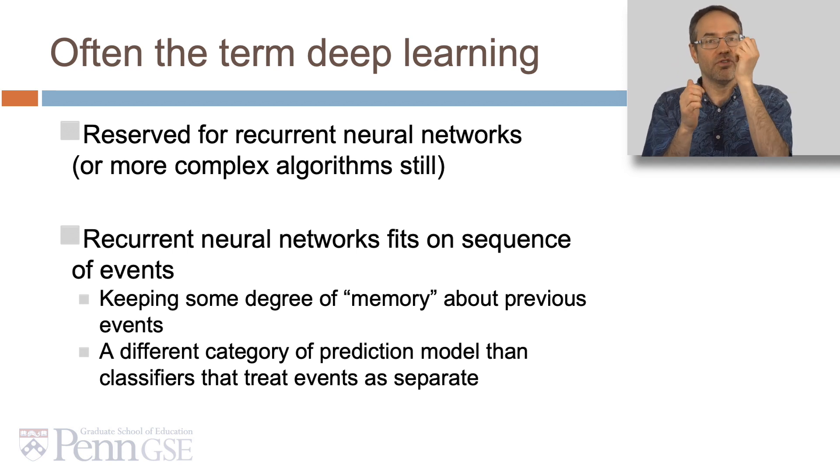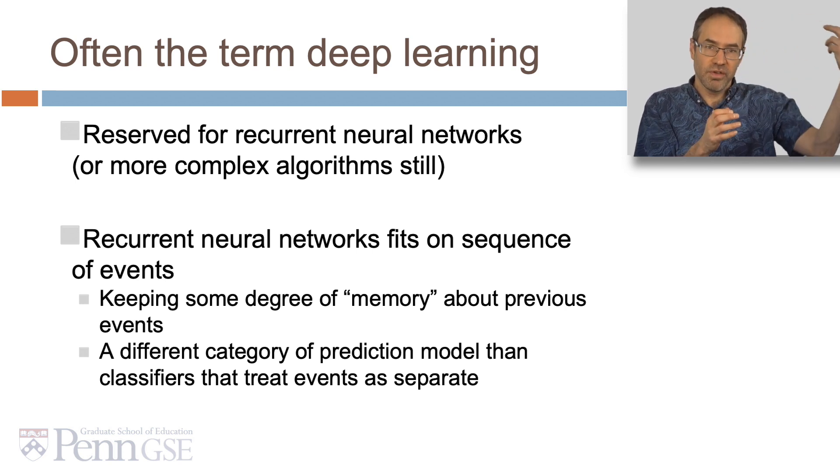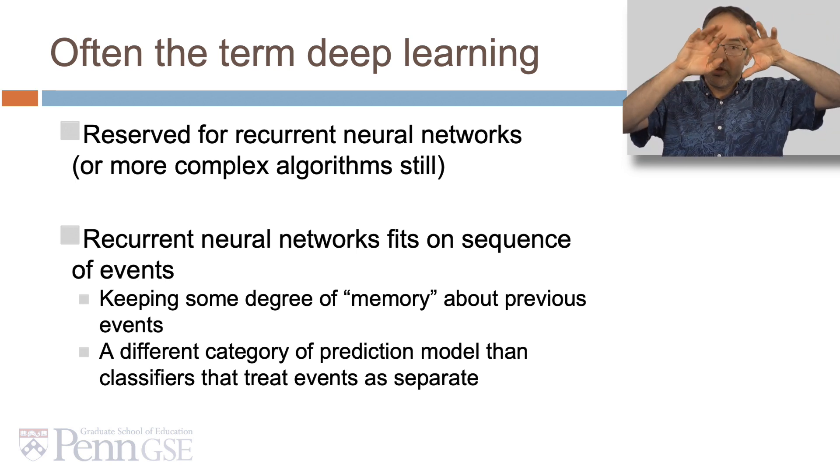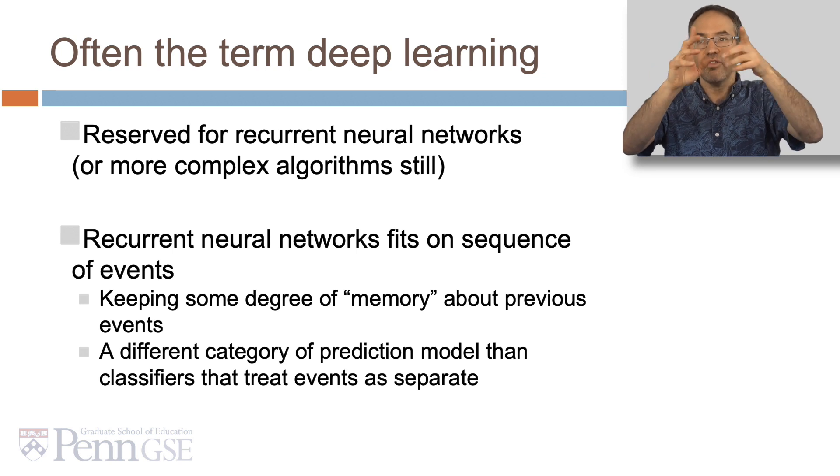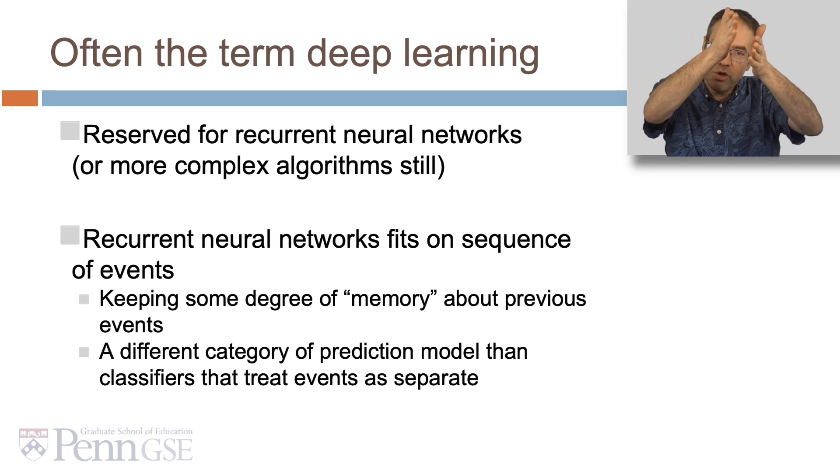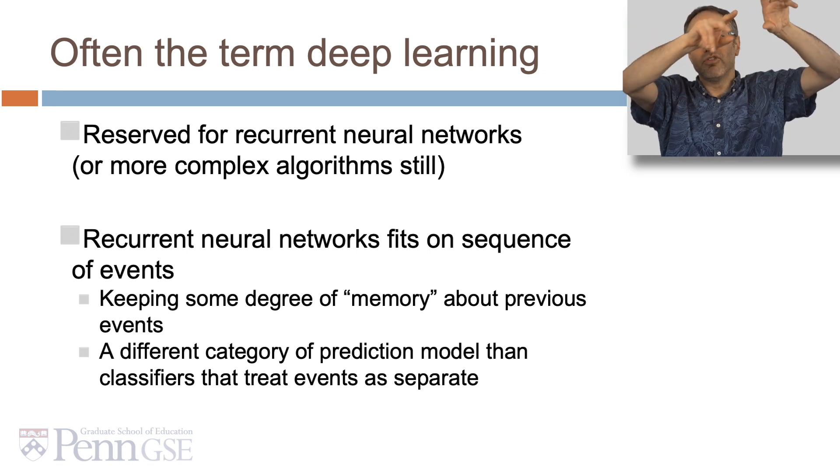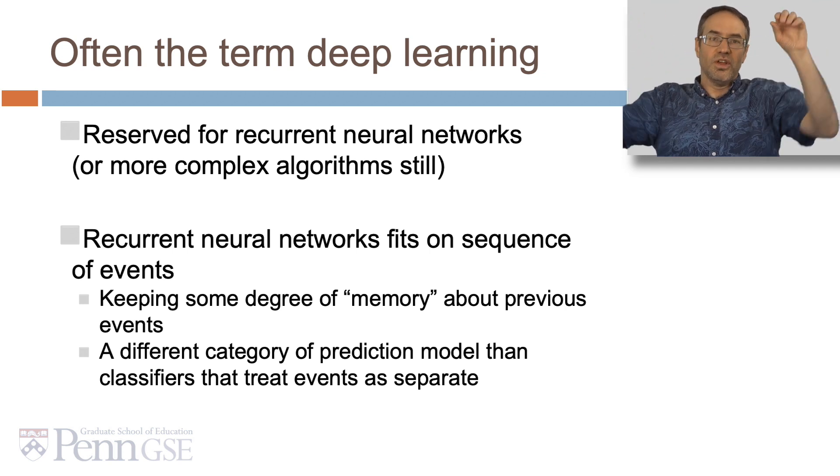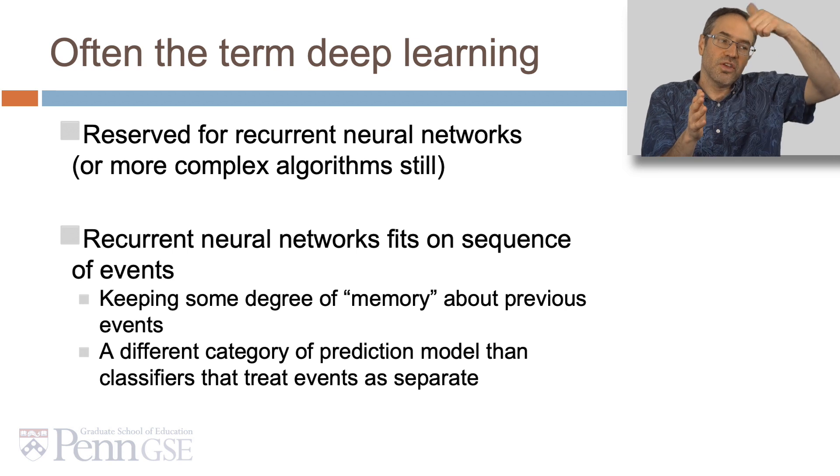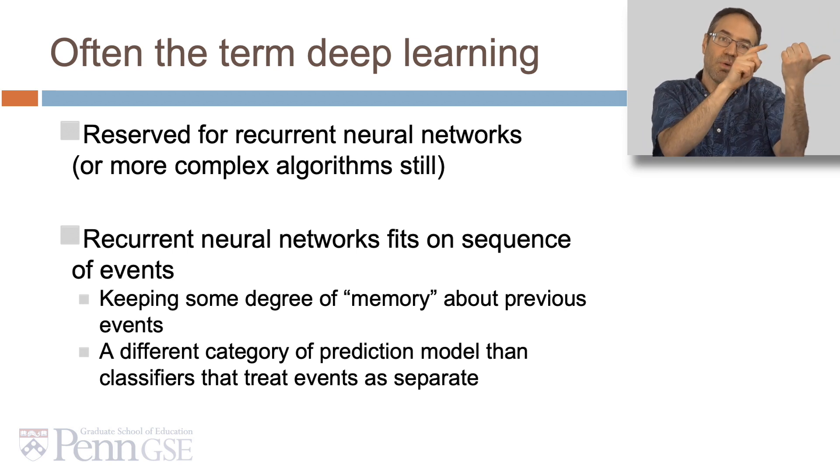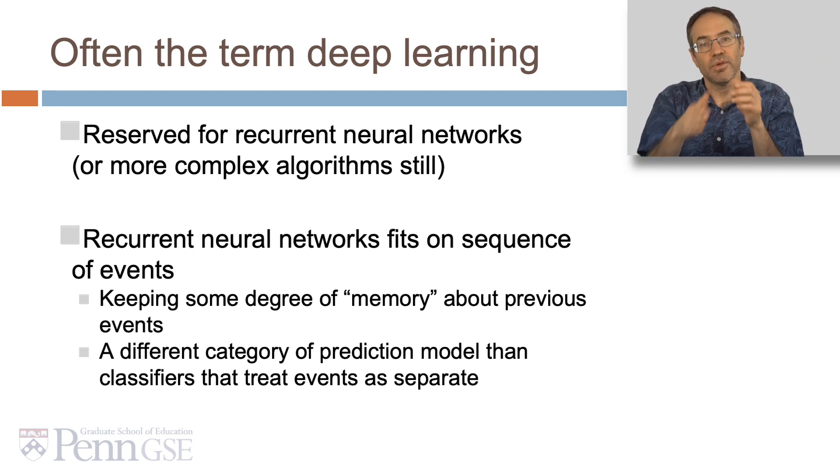Recurrent neural networks fit on a sequence of events. They keep some degree of memory about the previous events. What they're doing is, rather than having a single event, a single prediction being made, you have a sequence of events, a sequence of occurrences, and you want to make predictions about each event in that sequence. A recurrent neural network says, okay, I still remember what prediction I made for Ryan at time 4, now I'm making a prediction at time 5, and I'm going to use that information from time 4 and before. This is a different category of prediction model than classifiers that treat these events as separate.